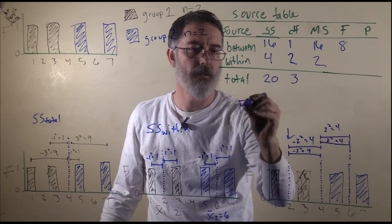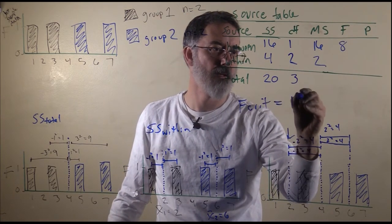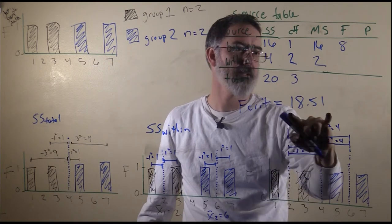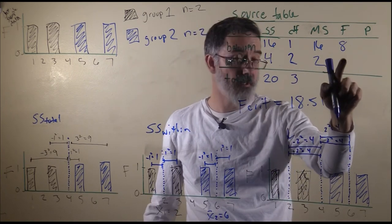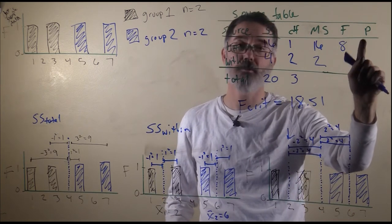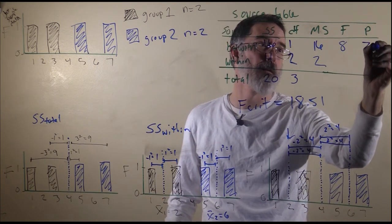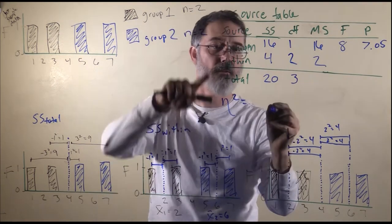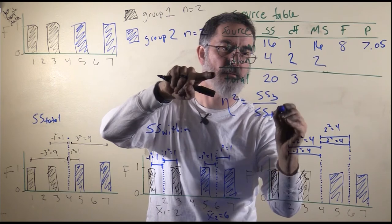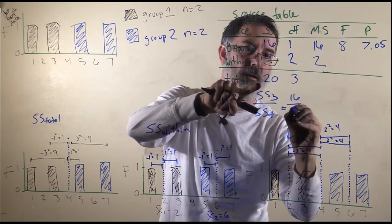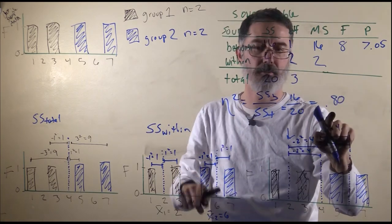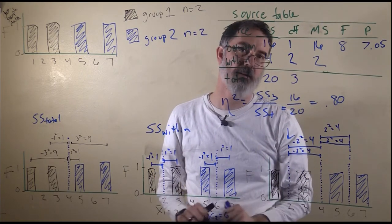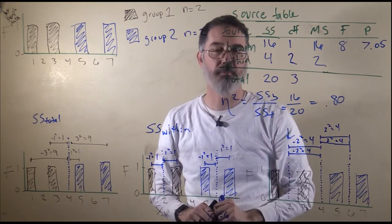I looked up the F critical for this test. For 2 degrees of freedom within and 1 between, the F critical is 18.51. Our F of 8 is not more extreme, so we would fail to reject the null hypothesis, and our p-value would be greater than 0.05. Since we have our source table, it is easy to calculate our effect size, eta squared: sums of squares between divided by sums of squares total is 16 divided by 20, which equals .80. That is a huge eta squared, but it is not statistically significant because we had so few participants — this was a really underpowered study.